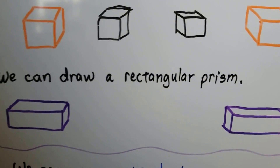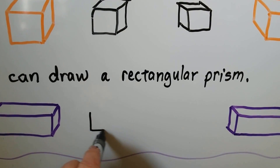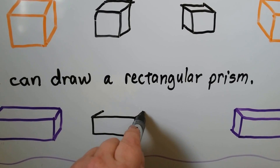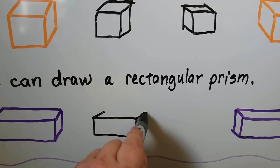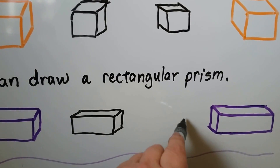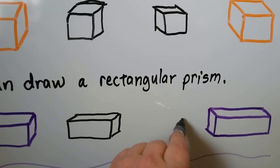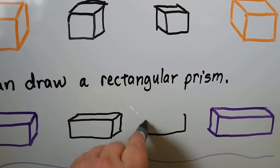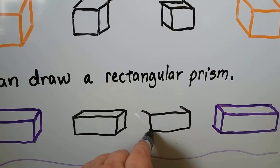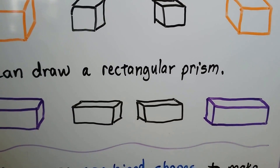We can also draw a rectangular prism the same way. Instead of a square, we start with a rectangle. We make our three lines coming out on a slant, and then we connect them. We can make it slanting either way, facing that direction so we see that side. We just make our rectangle, and the three lines come out and then we connect them.